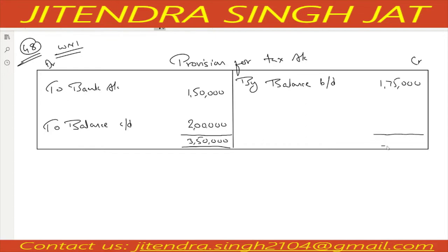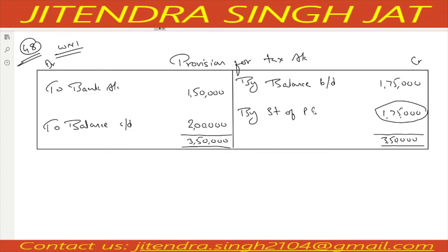3,50,000 minus 1,75,000 equals 1,75,000. This is the current year provision for tax from the Statement of Profit and Loss — the current year provision for tax required to start the numerical.